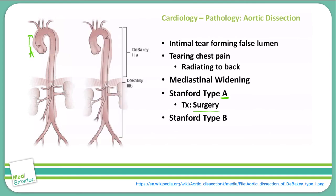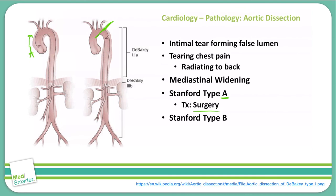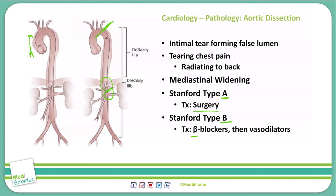The second type is Stanford type B, which is usually distal to the left subclavian artery. That intimal tear allows blood to form within the false lumen, involving the descending aorta only. A complication of Stanford type B is if the dissection extends low enough to cut off the mesenteric or renal arteries, causing complete blood flow loss. We typically treat this with beta blockers and vasodilators. You can remember that type B uses beta blockers and type B is below the subclavian artery.